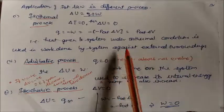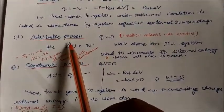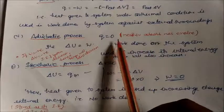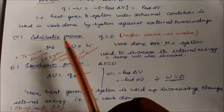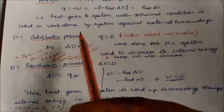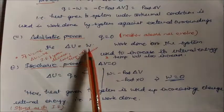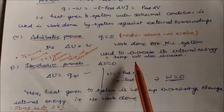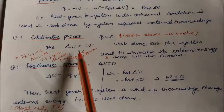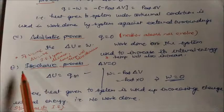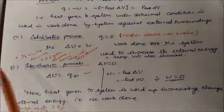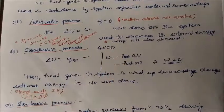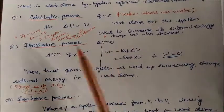In an adiabatic process, q = 0 — neither heat is absorbed nor evolved. This is like an isolated system. Therefore ΔU = w: work done on the system increases its internal energy and temperature. If w is negative (work done by system), internal energy and temperature both decrease.